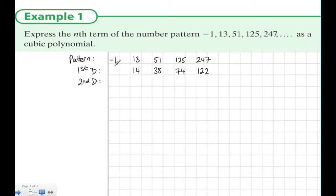And then we work out the second differences. Between 38 and 14 is 24, we get 36 and 48. And lastly, we work out the third differences. Between 36 and 24 we have 12, and again we have 12 between 48 and 36.